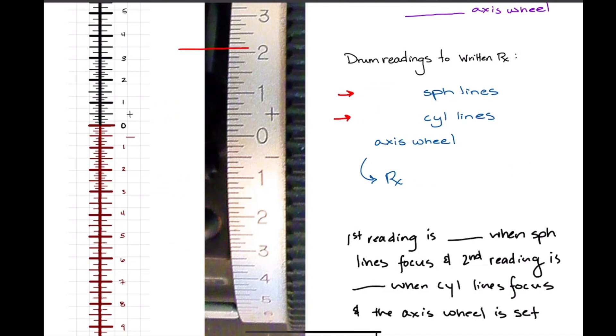I want to do another one. Say we focus here for the sphere, we would focus here for the cylinder, and the axis wheel is 135. So what do we got? So what was the power that we got for the sphere? Here's the 2, there's a quarter, we're right in between 2 and 2 and a quarter, so we're at plus 2.12, right?